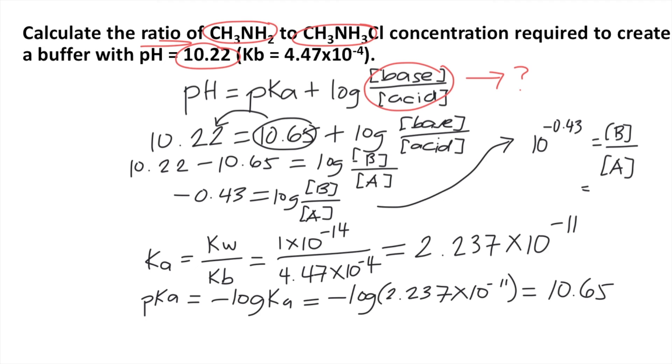If you do that in your calculator, 10 raised to negative 0.43, you will get 0.37. So the ratio of base over acid is 0.37, and that is the answer to the question.